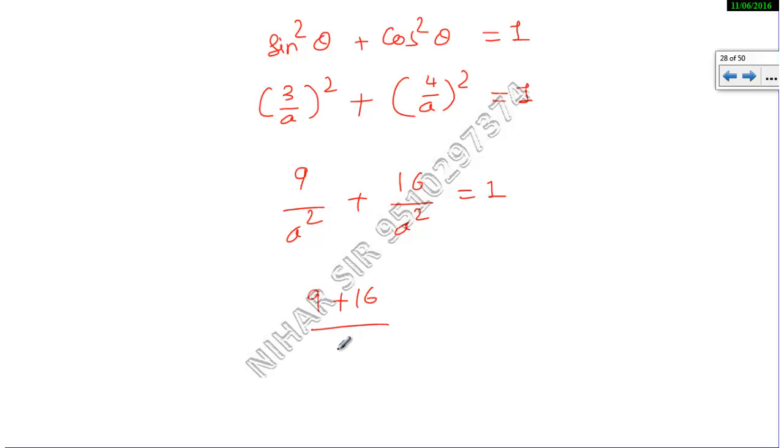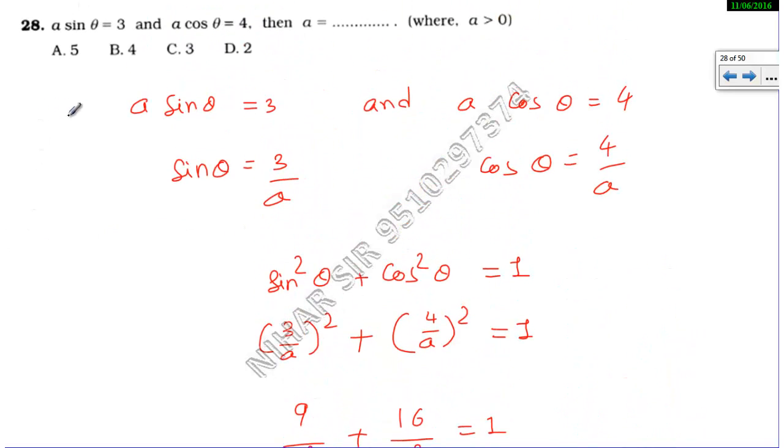So 25 = a². Now we need to take the root to find the value of a. So √25 means 5 = a, or we can say a = 5. So our answer is option A.